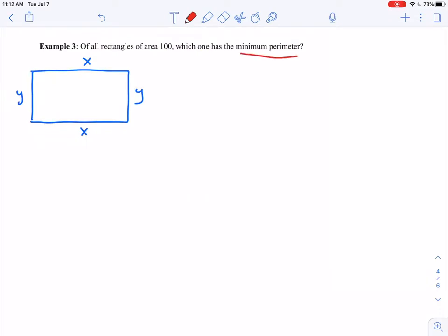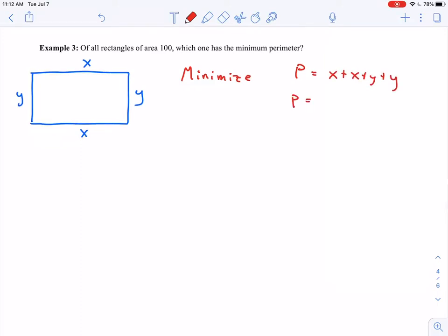We want to minimize perimeter. So we want to minimize the perimeter, which is P equals x plus x plus y plus y, or we can simplify that to be 2x plus 2y.